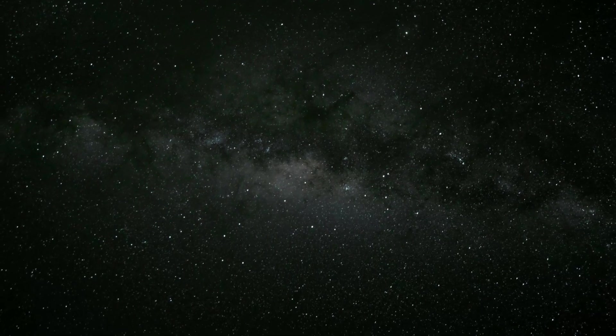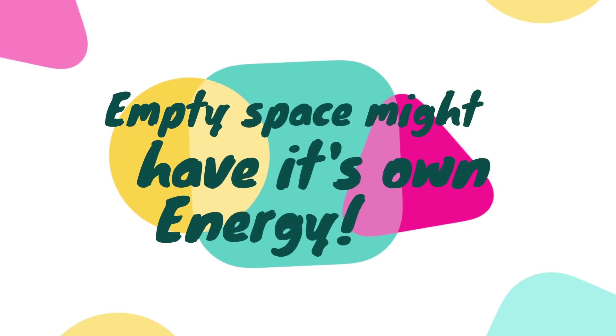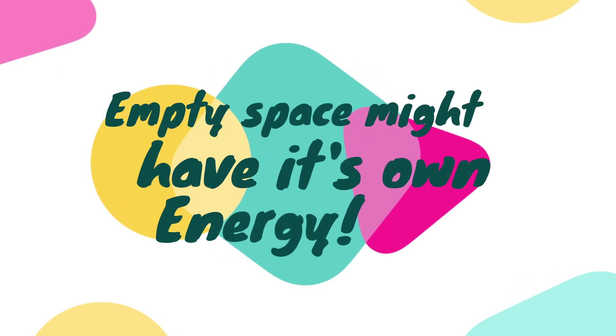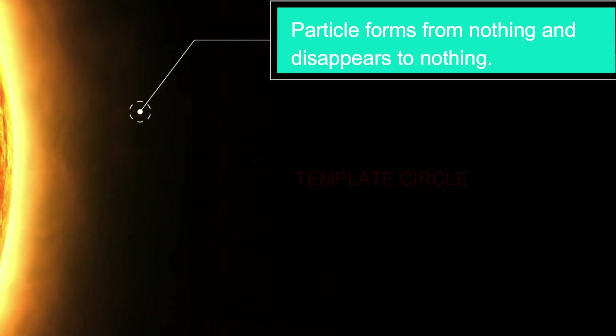We have found a few ideas about what dark matter might be. One of them is dark energy is not a thing, but just a property of space. Another, empty space is not nothing, it has its own energy. Another idea is that empty space is full of temporary particles which form from nothing and disappear into nothing again. The energy released by these particles may be dark energy.